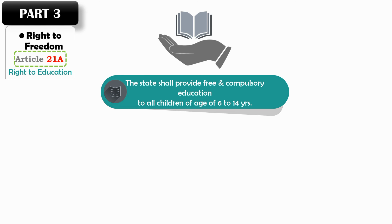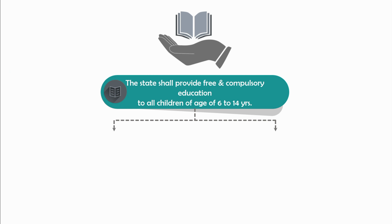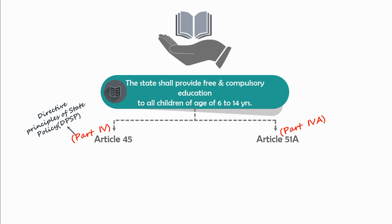When Article 21A was introduced, changes were made in two different articles of the Constitution — Article 45, which is given in Part 4, and Article 51A given in Part 4A. Part 4 deals with Directive Principles of State Policy, i.e. DPSP, and Part 4A deals with Fundamental Duties.